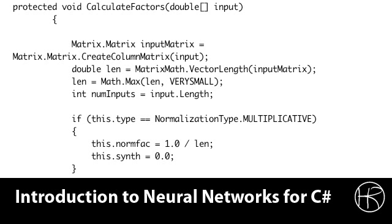It then creates an input matrix. An input matrix is essentially just a column matrix based on the input values that have been specified. We are going to get the vector length of the input matrix and we are going to make sure that the input length has not grown too small. We have a predefined very small variable that we will use. We establish this as a floor and do not allow the vector length to go below that. We also determine the number of inputs which will be used later.